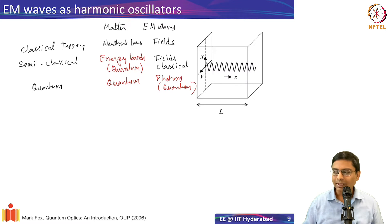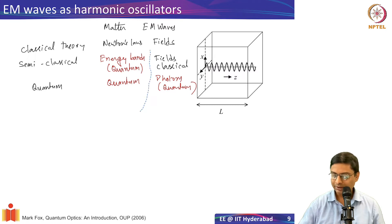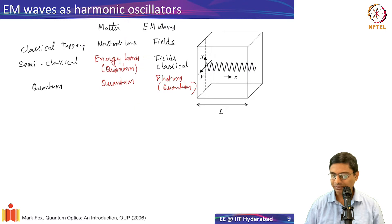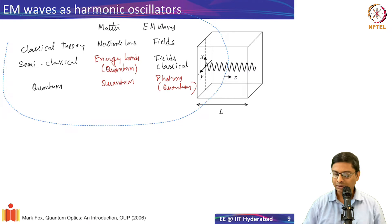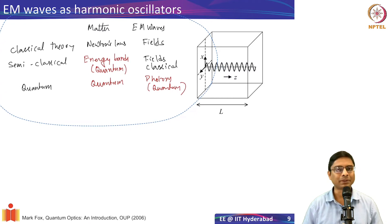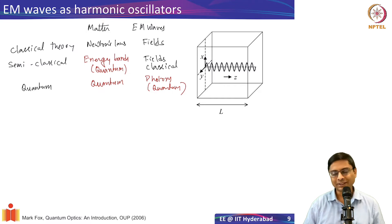There are advantages to doing the full quantum description. Many undergraduate students are apprehensive the moment they hear the word 'quantum,' thinking it's too complex. But that's not really true. To understand some elementary aspects, you don't need to know all of quantum mechanics. Two key things suffice: the particle-in-a-box problem and the quantum harmonic oscillator. If you understand the quantum harmonic oscillator, you understand quite a bit of quantum optics.